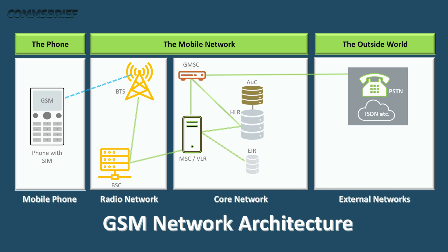HLR is the Home Location Register and VLR is the Visitor Location Register. HLR basically contains information about your home location, as the name suggests, and the services that you're entitled to use. HLR is a centralized database.